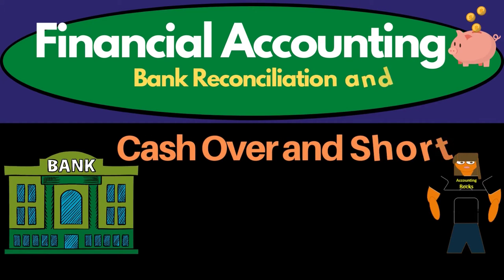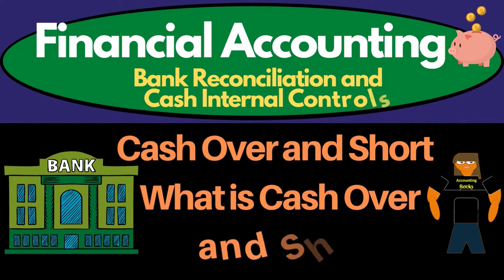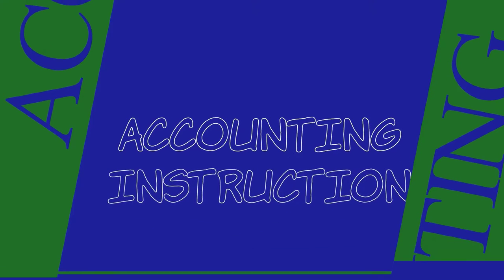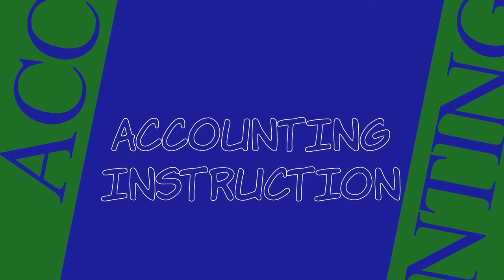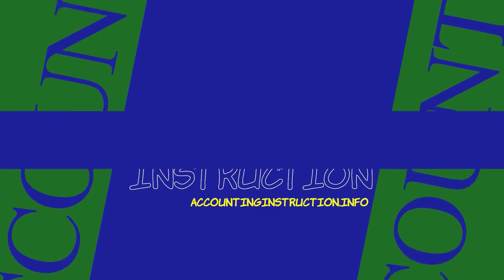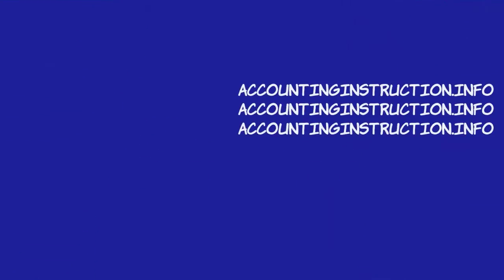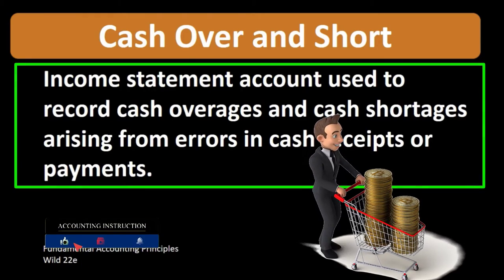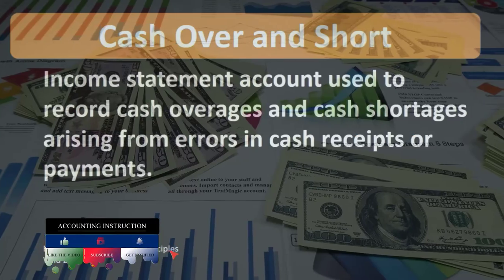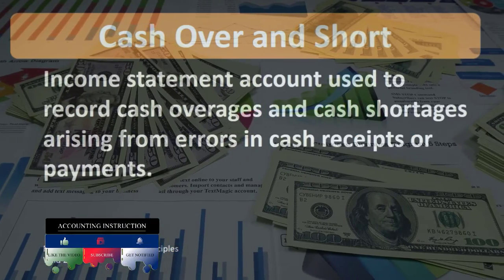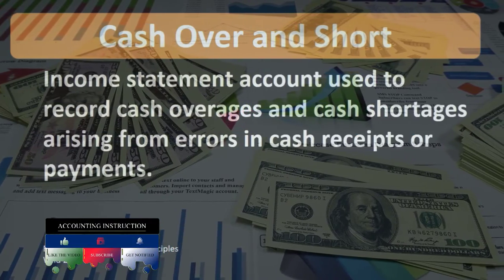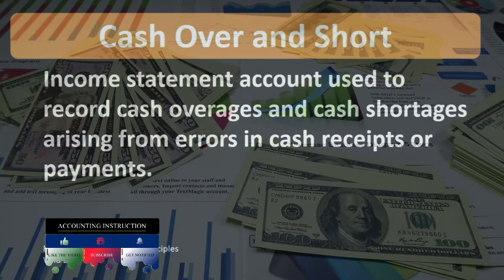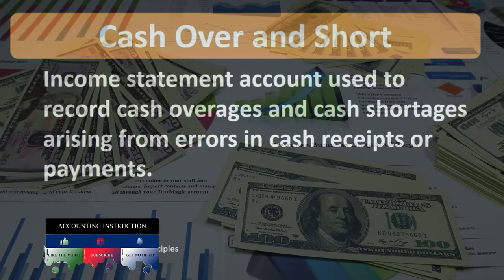In this lecture we will define cash over/short according to Fundamental Accounting Principles, Wild, 22nd edition. The definition of cash over/short is an income statement account used to record cash overages and cash shortages arising from errors in cash receipts or payment. The cash over/short account is really the account that shores up the problem of recording cash.